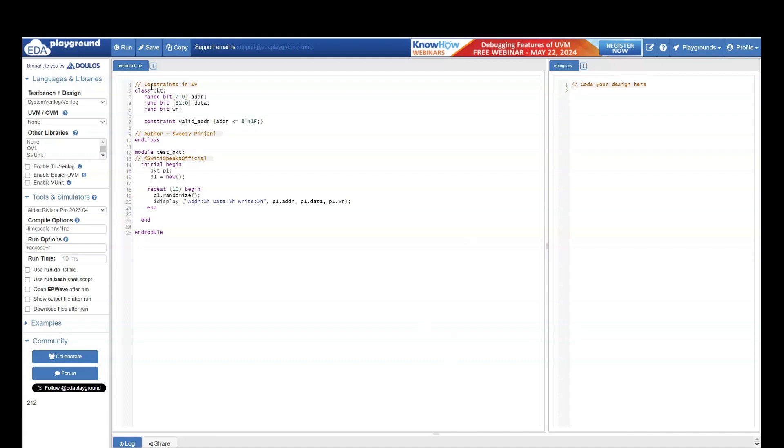Let us understand this example first. Here we are going to see Constraints in SystemVerilog. I have a class packet which has three different random variables. Address is randc which means it's cyclic randomization. We had covered about rand and randc in detail in our previous video lecture. But in short, randc stands for cyclic randomization. So it does not repeat value until all valid values are covered. And then we have two random variables which is data and write. Address is 8 bit, Data is 32 bit, and write is just 1 bit signal.